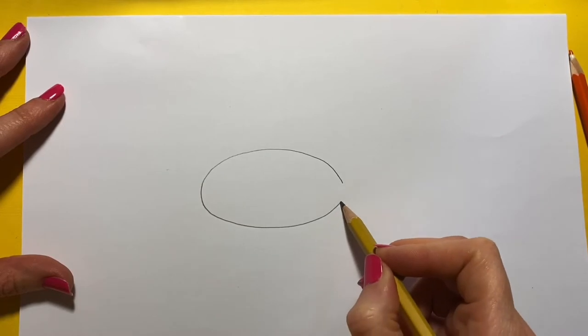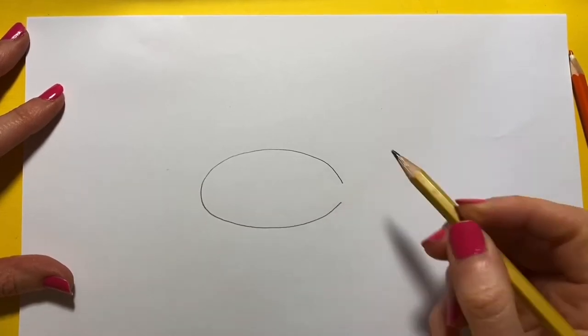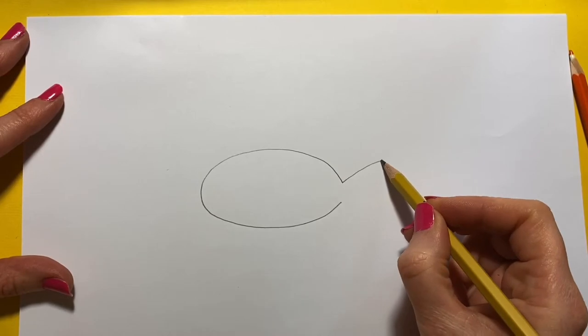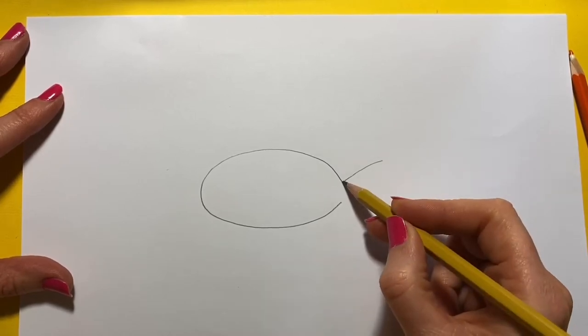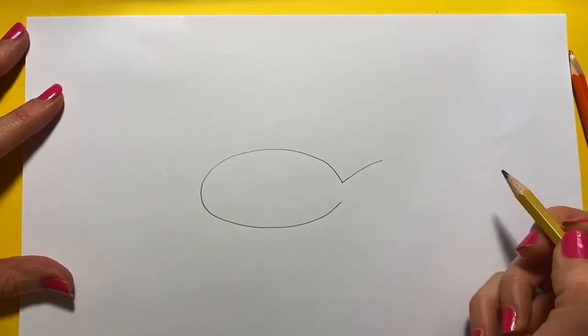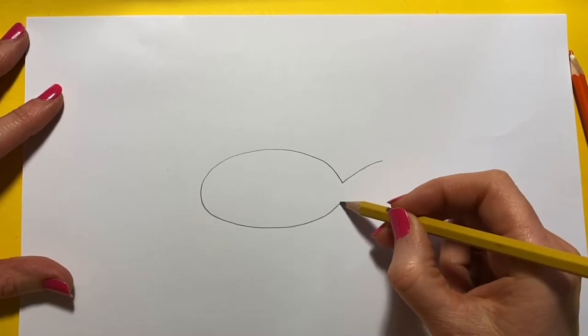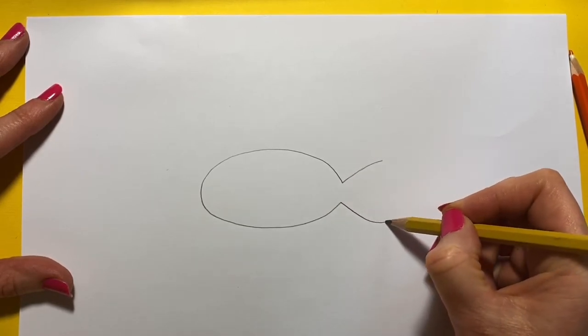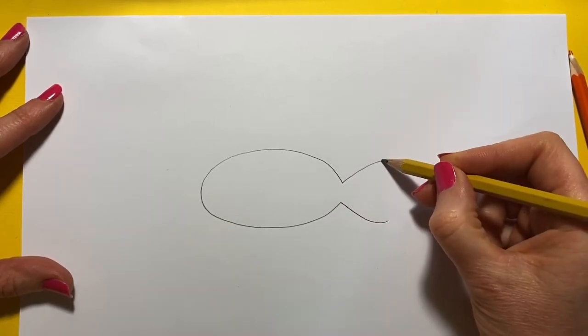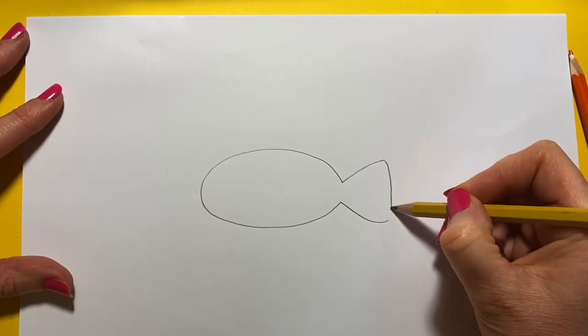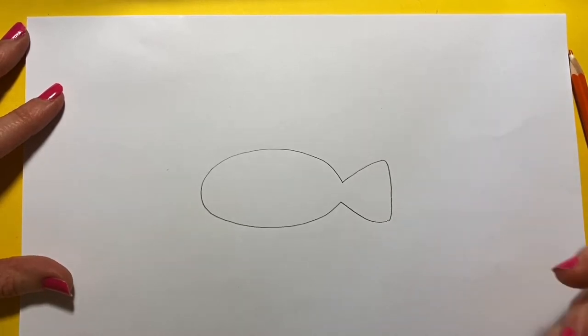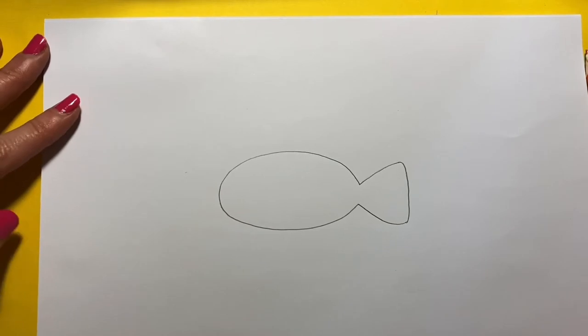We leave a little gap at the end, and the little gap is because we're going to put our tail here. So for our tail we just do a line up like that, and a line down like that, and then we join them together like that. There's the tail.